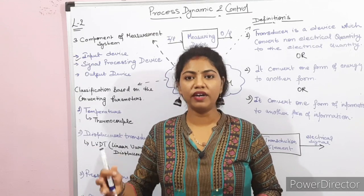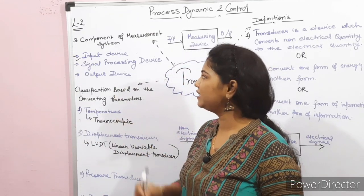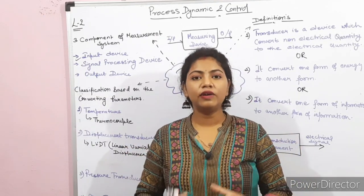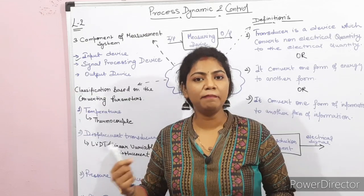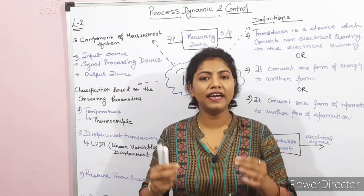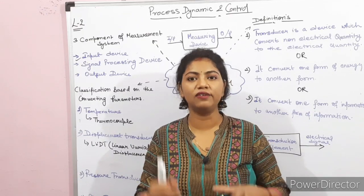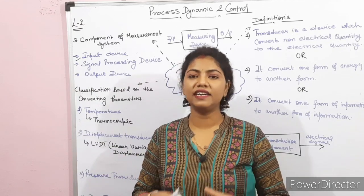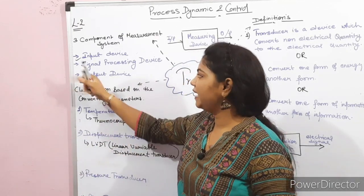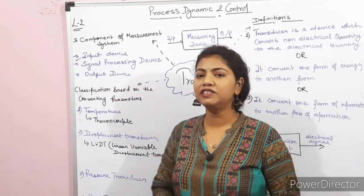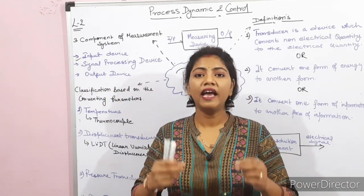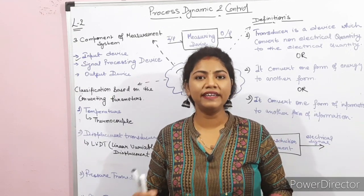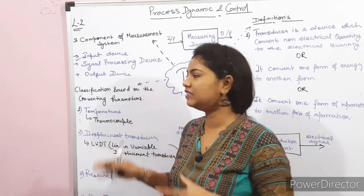Let's discuss each component one by one. The main function of the input device is to receive the signal which is going to be measured — it receives the quantity we need to measure. Next is the signal processing device, which amplifies, moderates, or filters the signal. In short, all the conditioning of the signal is done in this device.